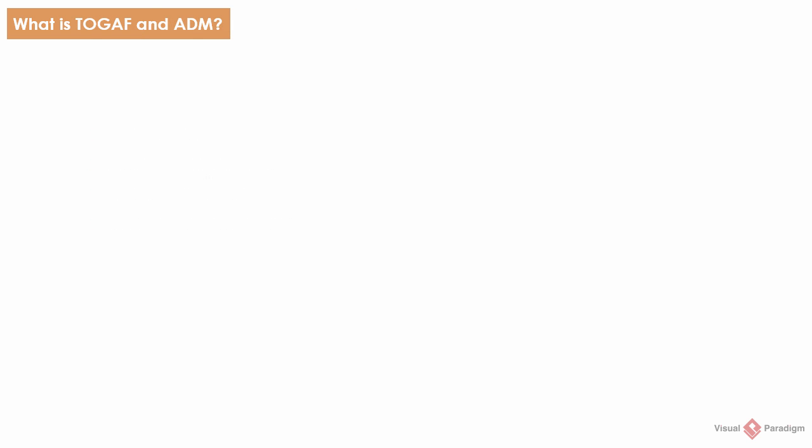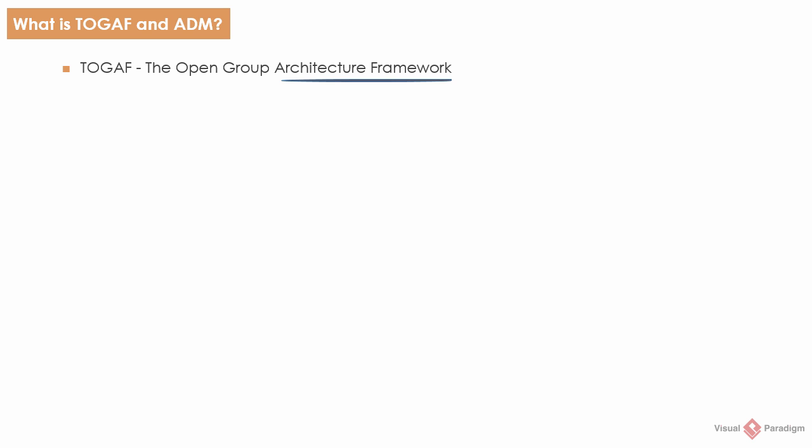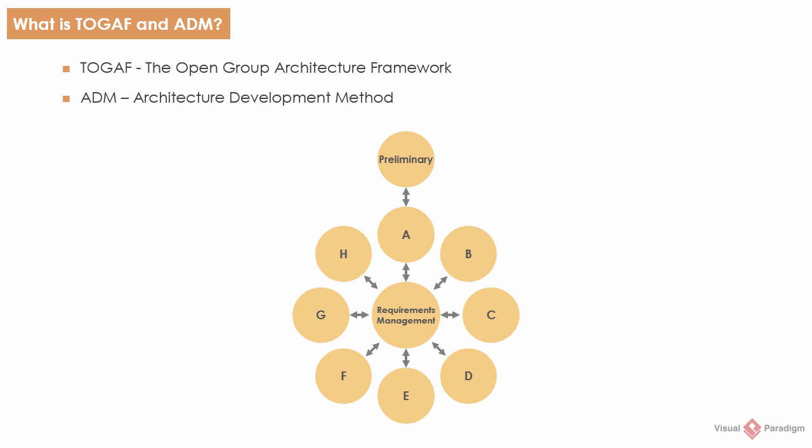TOGAF is the short form of The Open Group Architecture Framework. TOGAF is developed and maintained by the Open Group, which is a global consortium that enables the achievement of business objectives through IT standards. It has more than 500 member organizations and a diverse membership spanning different sectors of the IT community, such as customers, tool vendors, solution providers, and consultants. TOGAF provides detailed methods and a set of supporting tools for developing an enterprise architecture. ADM is an architecture method suggested by TOGAF — a method for developing and managing the life cycle of an enterprise architecture and forms the core of TOGAF.